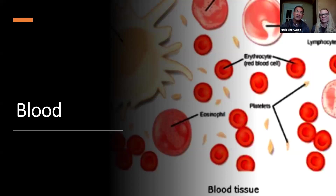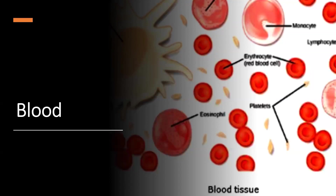Continuing our discussion on blood: there are about five main functions. First, blood transports oxygen from your lungs to your body cells and brings the waste product carbon dioxide back to the lungs so you can exhale it. Oxygen is an essential ingredient in aerobic cellular respiration carried out in the human body — remember we talked about respiration in the mitochondria. The red blood cell transports this oxygen from the lungs to the rest of your body.